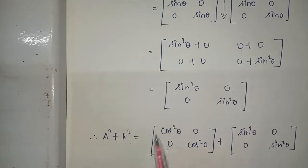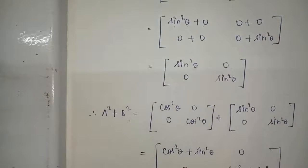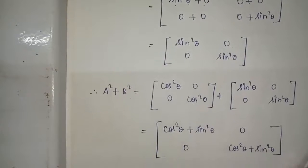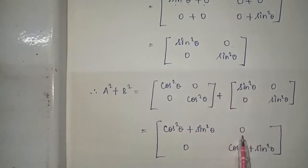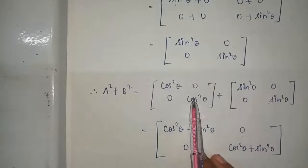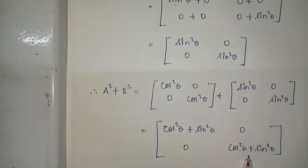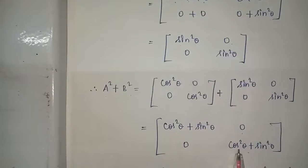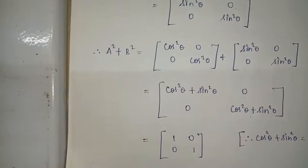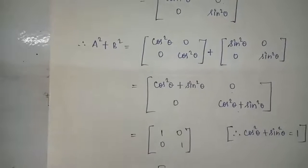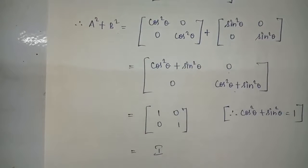The next step is to add the two matrices: A squared plus B squared. Adding corresponding elements gives cos squared theta plus sin squared theta, 0 plus 0 which is 0, 0 plus 0 which is 0, cos squared theta plus sin squared theta. Using the trigonometric identity, cos squared theta plus sin squared theta equals 1, so the result is 1 0 0 1, which is the identity matrix. Therefore A squared plus B squared equals I. Hence proved.